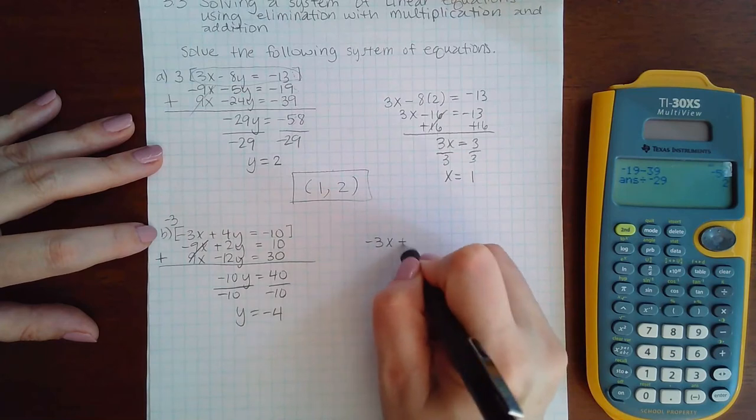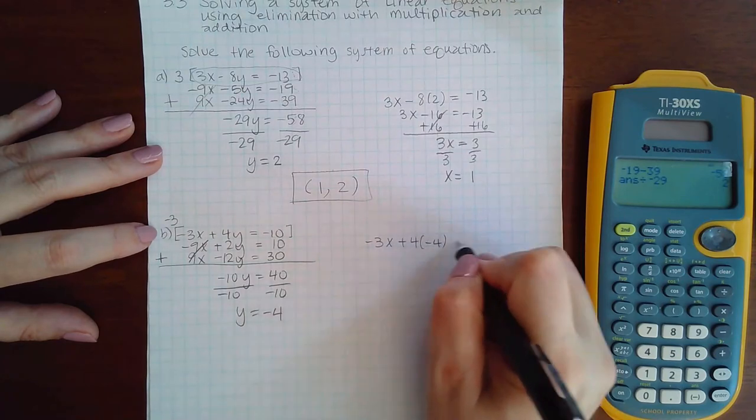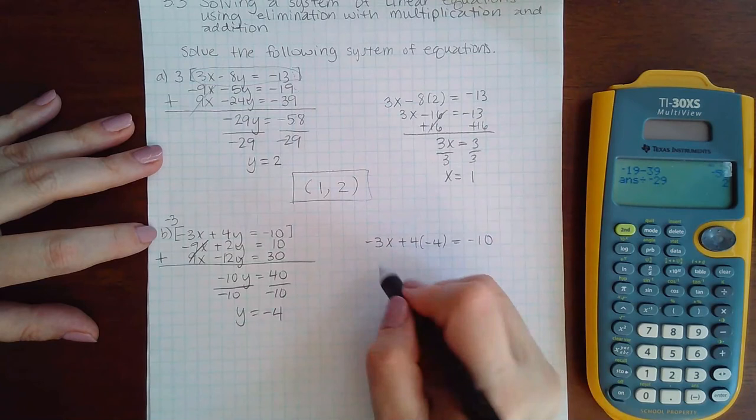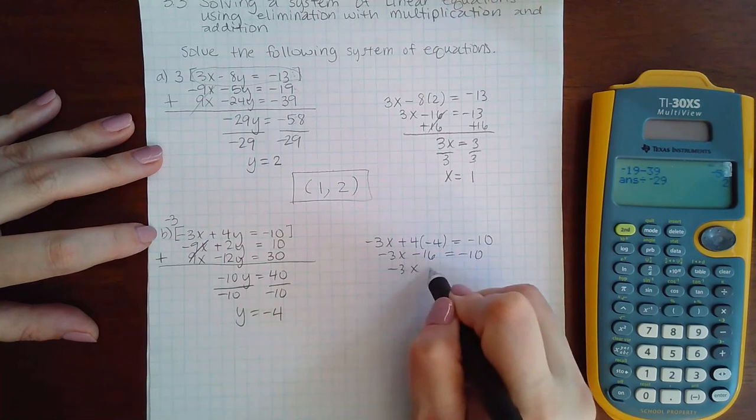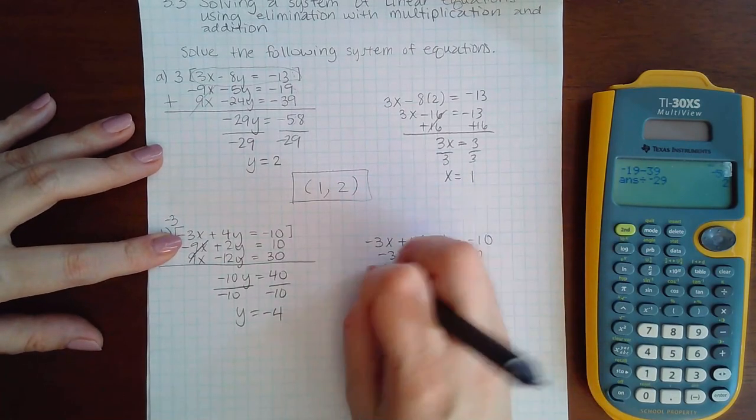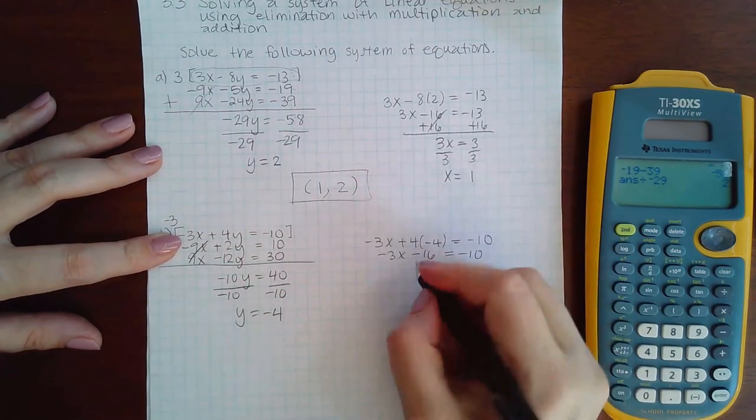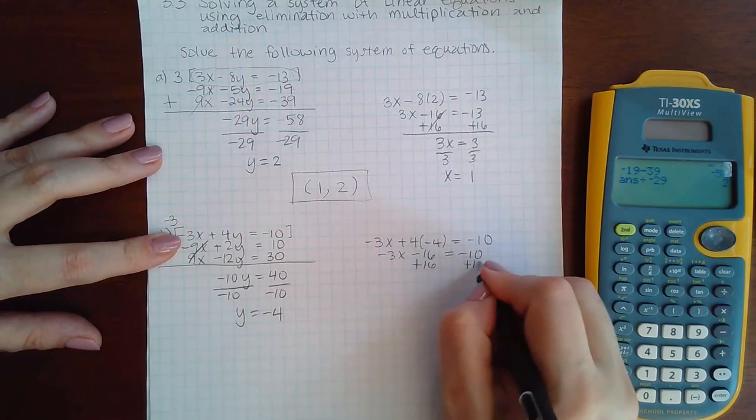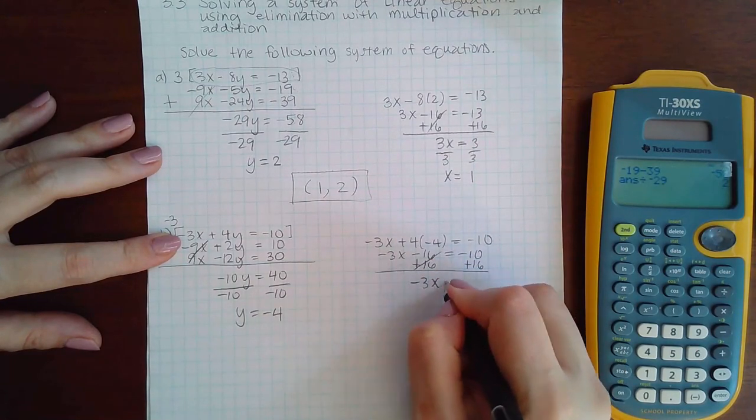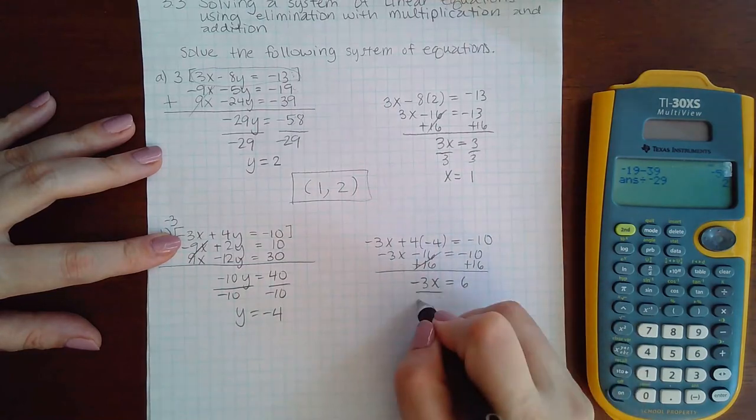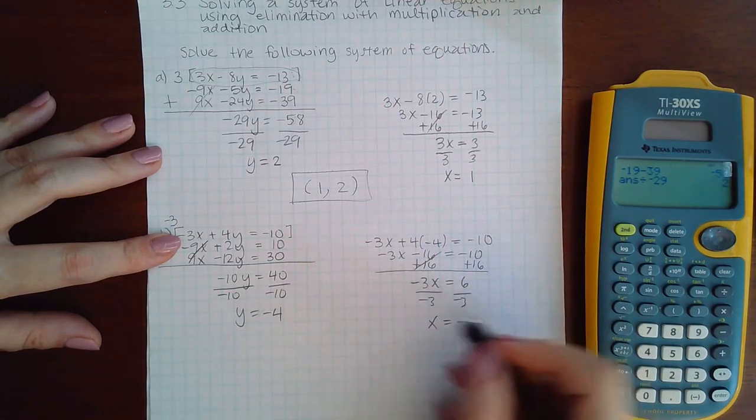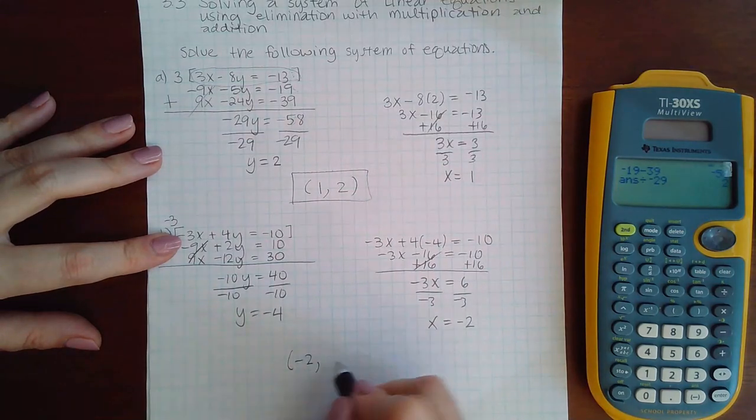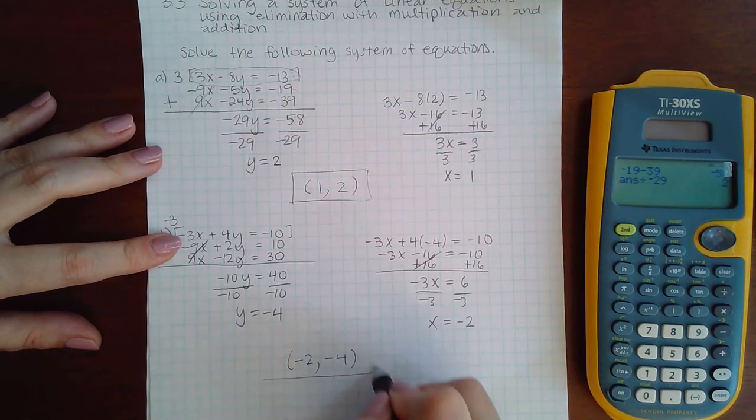And then I get negative 3x minus 16 equal to negative 10. Negative 3x, I'm sorry, plus 16, and plus 16 gives me negative 3x equal to 6. And then divide by negative 3, I get x equals negative 2. So the x coordinate is negative 2, the y coordinate is negative 4.